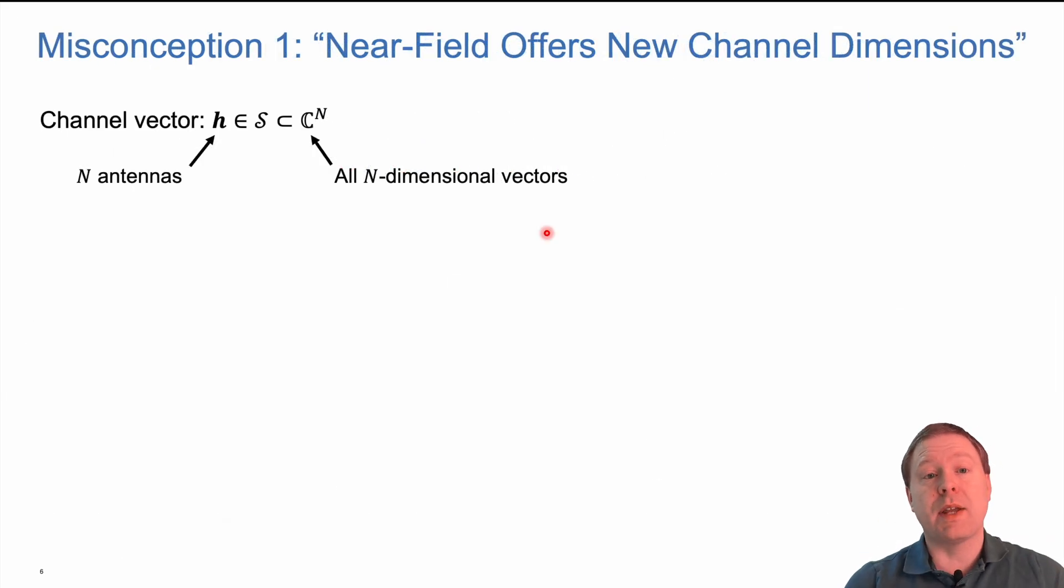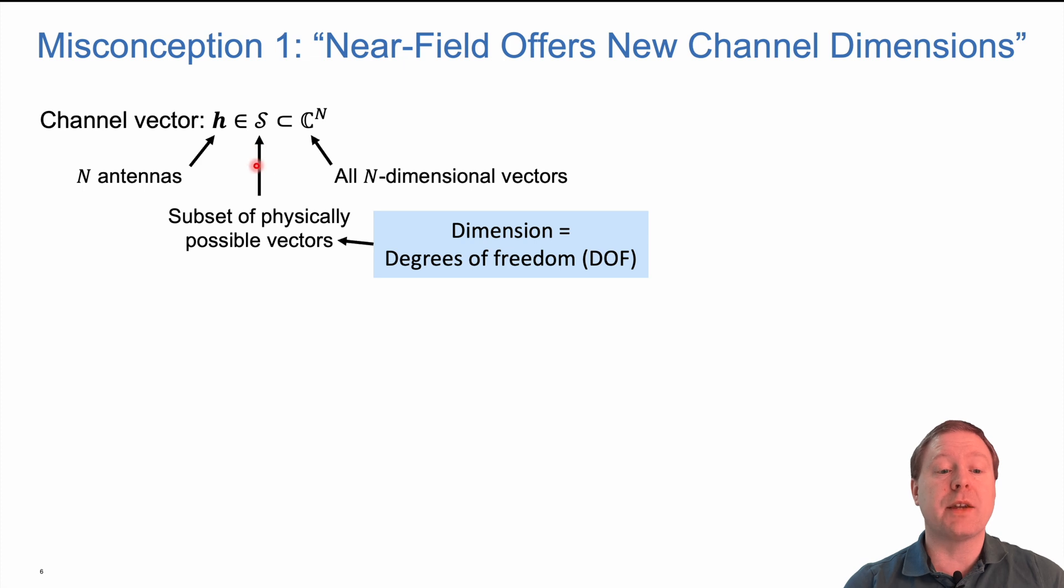So let us now have a look at some misconceptions. The first misconception is that the near field offers new channel dimensions that we couldn't use in the far field. The channel vector, when we have n antennas, is an n-dimensional vector. Among all of the n-dimensional vectors, there is actually only a particular subset that are physically possible to be channels. The dimension of this is known as the degrees of freedom, and it can be smaller than n.